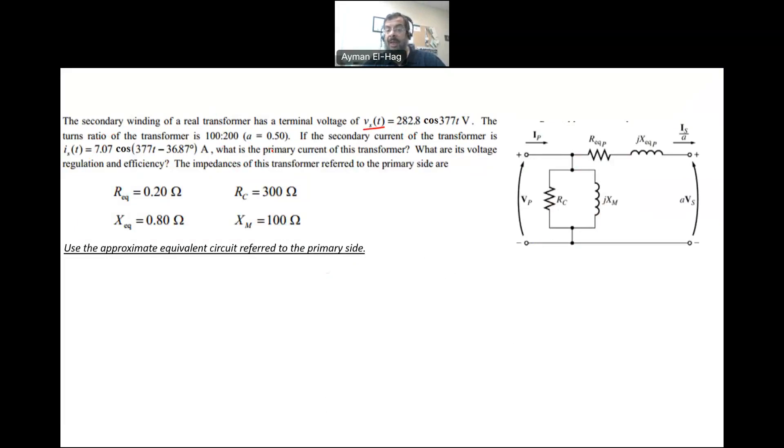What is the primary current? We want to find IP. And what are its voltage regulation and efficiency? We are given everything referred to the primary side of the transformer. These values, the R equivalent, the X equivalent, RC, XM, are already given to us referred to the primary. We don't need to do any model conversion because everything is given to the primary. The model is also referred to the primary, so we have AVs and IS over A.